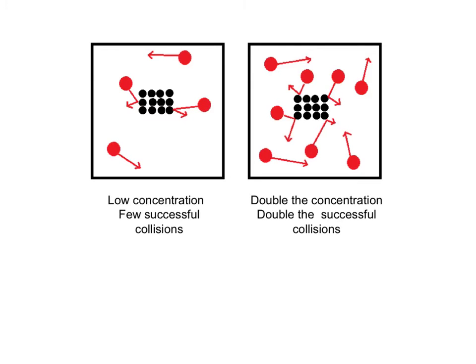This diagram shows a different situation. For example, here we might have hydrochloric acid being shown here as the red particles reacting with a solid like magnesium. And in this case, on the left-hand side, we've got a low concentration of the acid. Only four of the acid particles shown in this volume, and therefore we've got very infrequent collisions and therefore a slow rate of reaction.